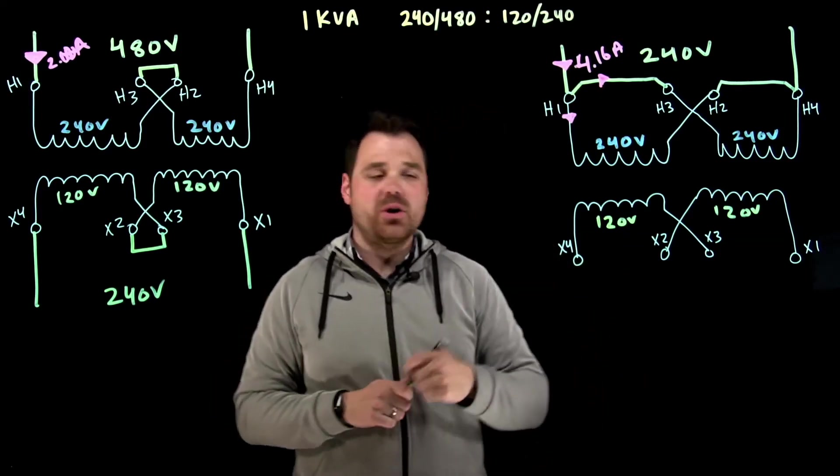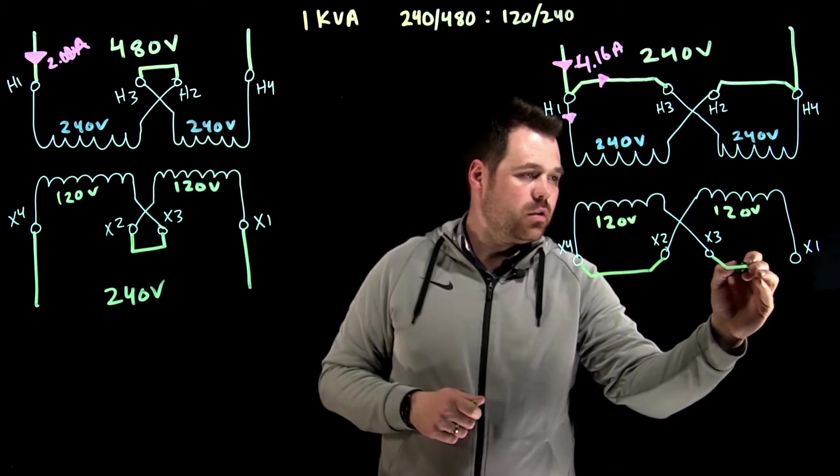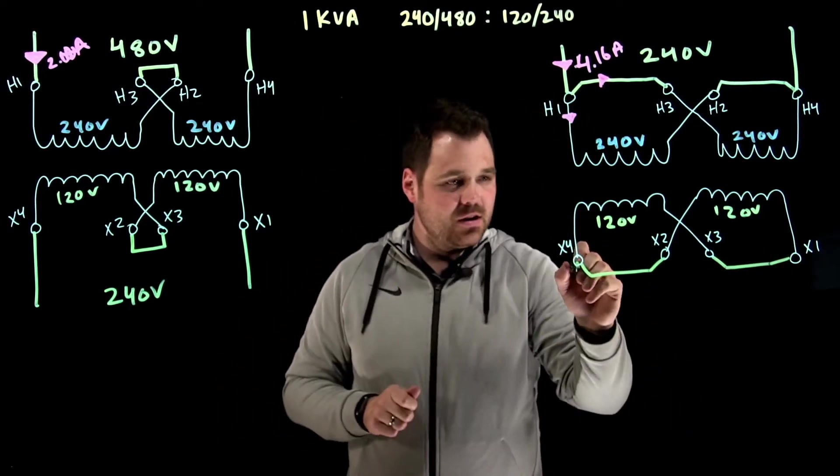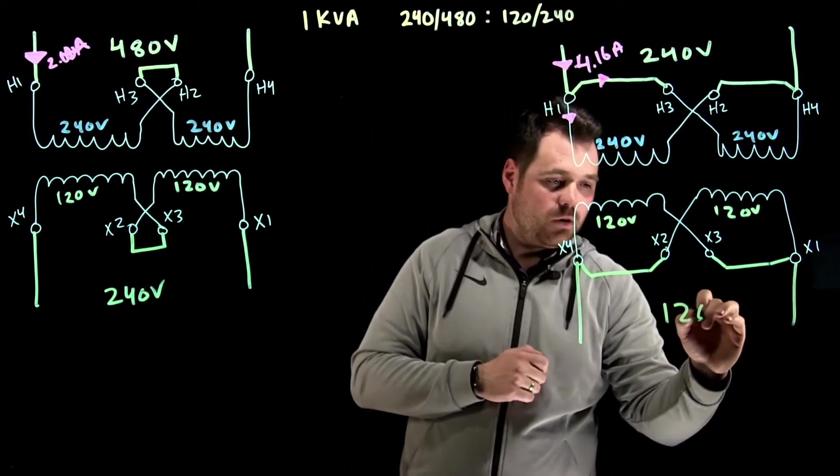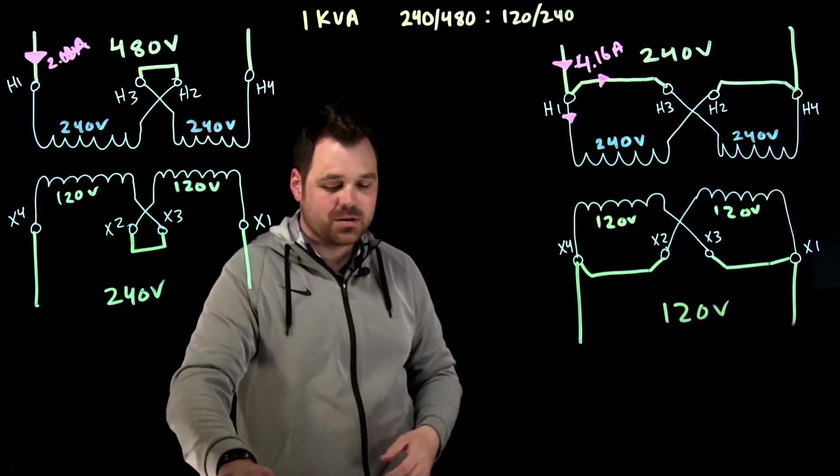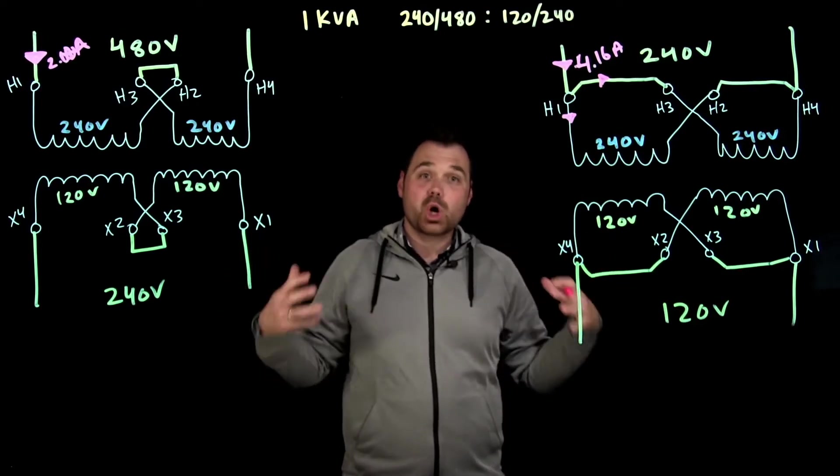Now over here, if I were to connect them in parallel, X2 to X4, X3 to X1, just like that, my odds and my evens together. Now, two windings in parallel, both would be good for 120 volts. Either a load or a source. That's awesome. Very cool. What does that mean for current though?